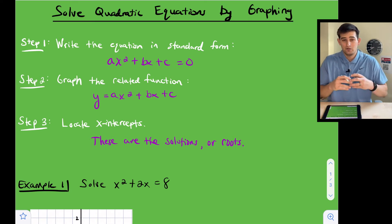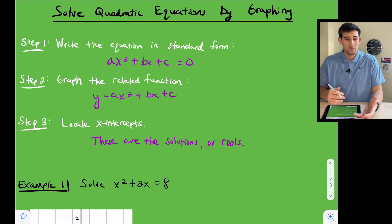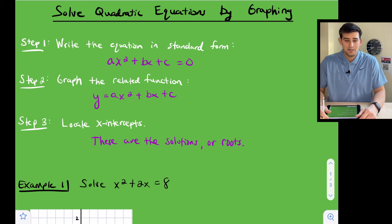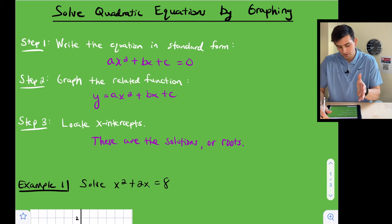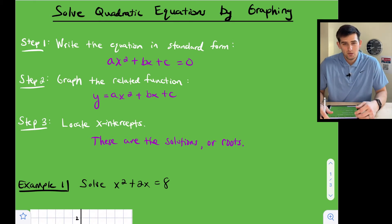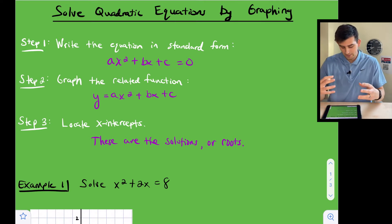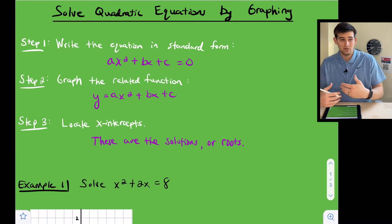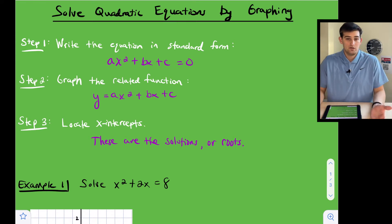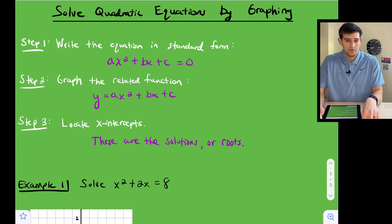I've done a video on how to graph a quadratic that's in standard form ax squared plus bx plus c. That's the form we want to make sure our quadratic is in. Step one: write the equation in standard form — ax squared plus bx plus c equals zero. Once we have that equal to zero, we graph the related function by setting it equal to y. This gives us a parabola, which could look one of three ways.